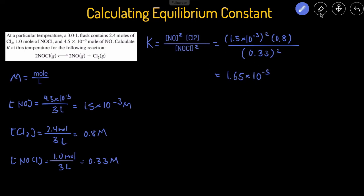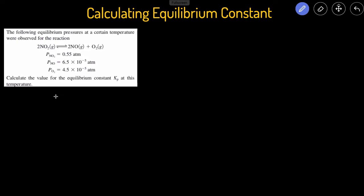This last problem is similar but a little different from the first two. We have a balanced chemical reaction, but this time we're given equilibrium pressures instead of equilibrium concentrations or moles. It's asking us to calculate Kp instead of K. Kp is really similar to K, but instead of concentration of products over reactants, it equals the pressure of the products over the pressure of the reactants.